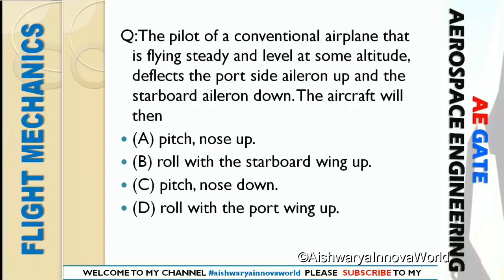An aircraft is flying steady and level at some altitude, and deflects the portside aileron up and the starboard aileron down. The aircraft will then — four options: pitch nose up, roll with the starboard wing up, pitch nose down, or roll with the port wing up.